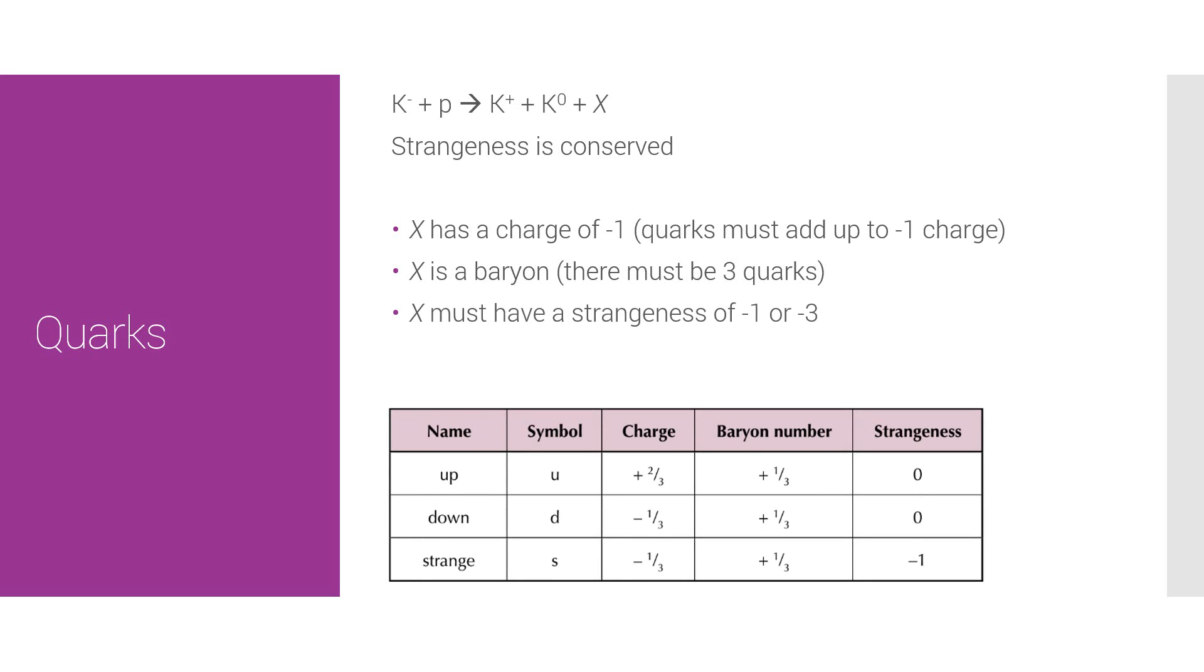Let's bring up our little quark table. The combinations that work here, if strangeness is minus one, then the combination that works here is strange down down. That gives a baryon number of one, gives a charge of minus one, and a strangeness of minus one. So, it works. If X is going to have a strangeness of minus three, then a strange, strange, strange combination would work. That, once again, has a baryon number of one, a charge of minus one, and a strangeness of minus three. So, either of those quark combinations can be X.